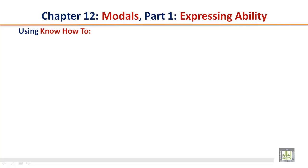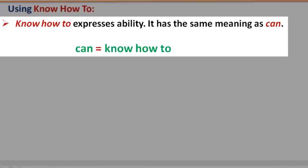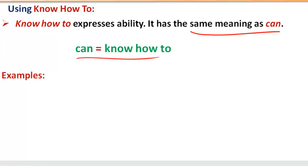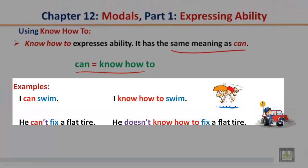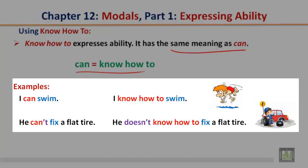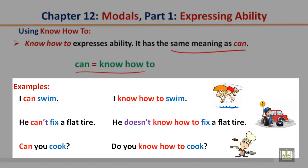Using know how to. Know how to expresses ability; it has the same meaning as can. Can equals know how to. Examples: I can swim. / I know how to swim. He can't fix a flat tire. / He doesn't know how to fix a flat tire. Doesn't is a contraction of does not. Can you cook? / Do you know how to cook?